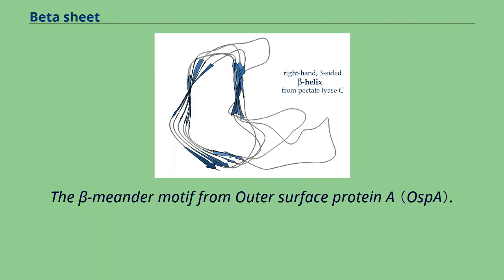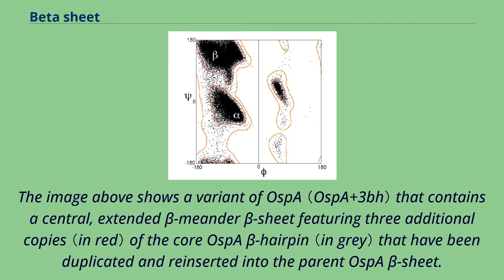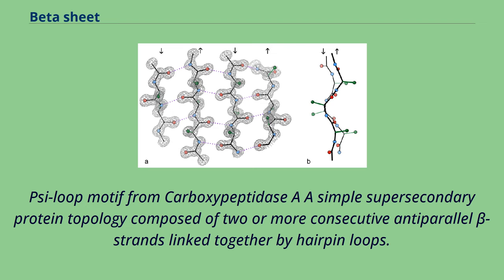The beta-meander motif from outer surface protein A. The image above shows a variant of OSPA that contains a central extended beta-meander beta sheet featuring three additional copies of the core OSPA beta hairpin that have been duplicated and reinserted into the parent OSPA beta sheet.